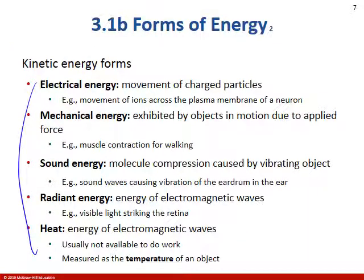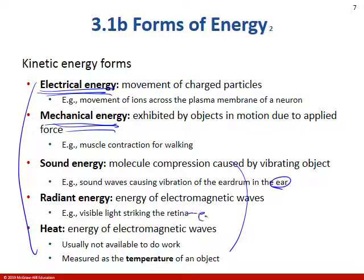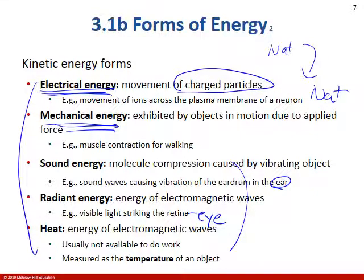There are many forms of kinetic energy. The two most important right now are electrical energy — the movement of charged particles, like sodium ions moving across the plasma membrane — and mechanical energy, exhibited by objects in motion due to applied force. The heart is the best example: cardiac muscle contracts and pumps blood through the cardiovascular system — blood put in motion by the force of the heart's muscle contraction.